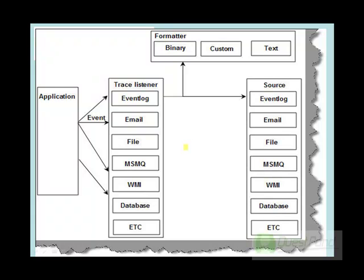In the Microsoft logging application block, you need to define three important things in order to log errors. The first thing is the source — where do you want to log the error? Do you want to log into event logs, send an email, write a file, use MSMQ, log into a database, or into WMI? First, you need to define the source.